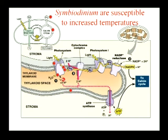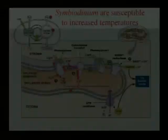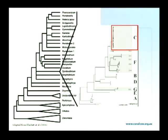Why do we care? Particularly if we're looking at thermal stress, it seems that symbiodinium is possibly the most thermally sensitive partner in the symbiosis. There have been a variety of hypotheses put forward indicating where this thermal stress may occur — anywhere from the uptake of CO2 to rubisco to light harvesting complexes to lipid membranes. If we want to understand which of these processes is actually the thermally sensitive one, we need to understand what proteins are there.